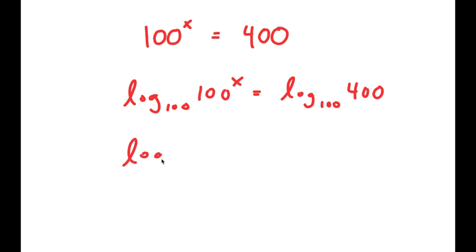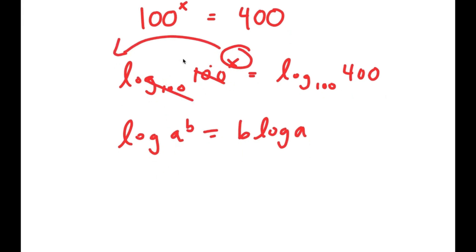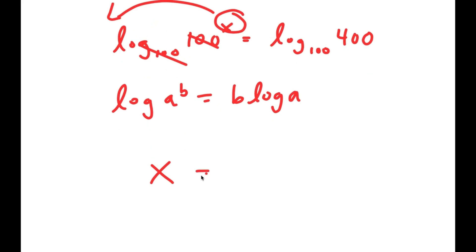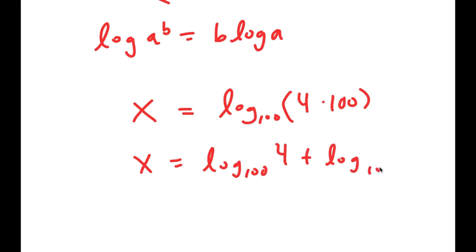Now, if I have something in the form log a to the power of b, this is equal to b times log a. So I can move this x to the front, and the log base 100 of 100 cancels out. So my left-hand side, I have x is equal to log base 100, and I'm going to rewrite 400 as 4 times 100. So I get x is equal to log base 100 of 4 plus log base 100 of 100, which cancels out to get 1.